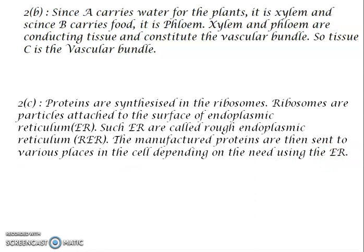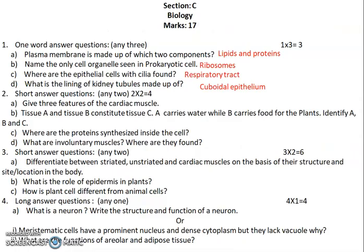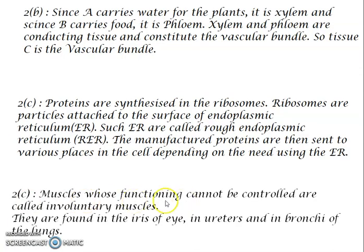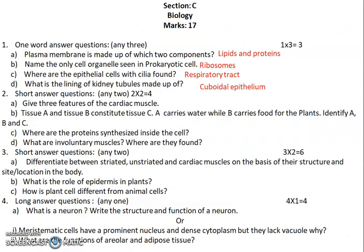Question 2d: where are involuntary muscles found? Involuntary muscles are those whose functioning cannot be controlled. They are found in the areas of the eye, in the ureters, and in the bronchi of the lungs.